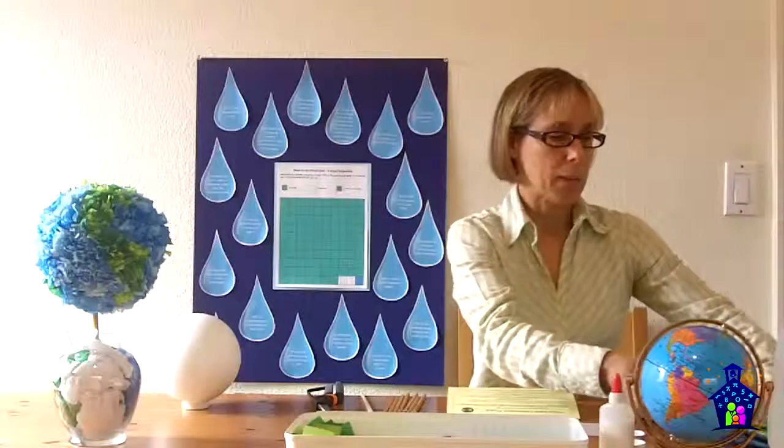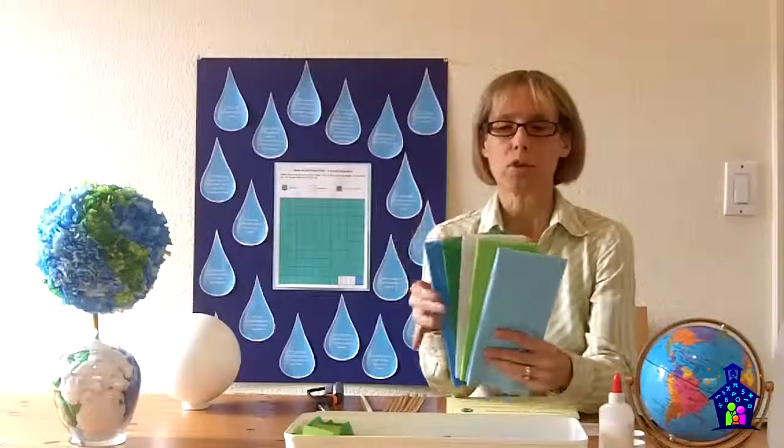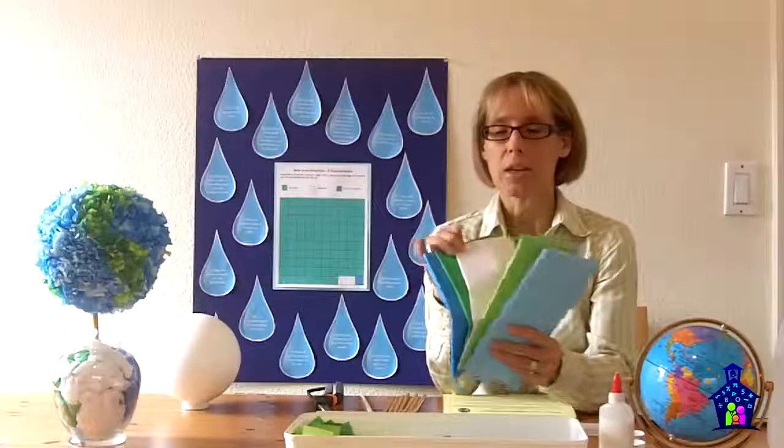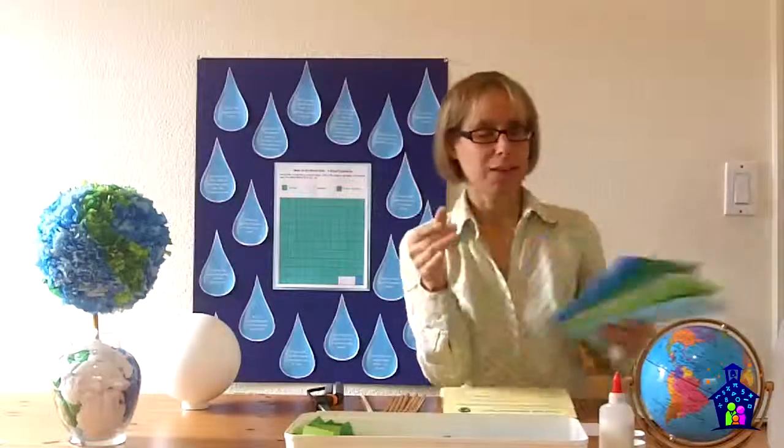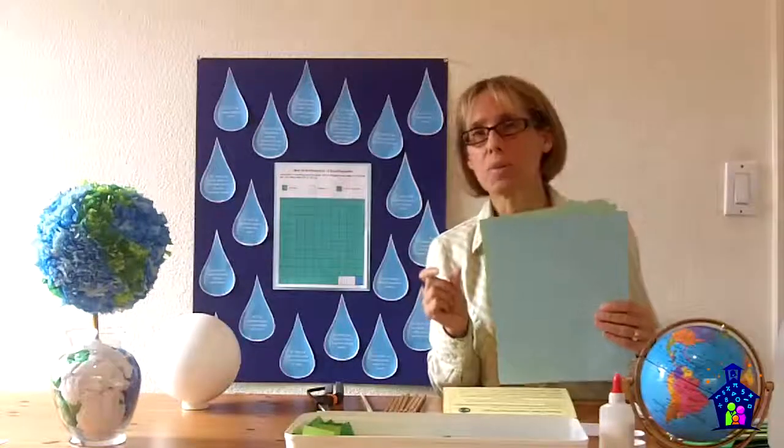You're going to need to gather some materials. First you're going to need tissue paper and I chose two different shades of blue and two different shades of green and then you'll need some white also for Antarctica. You're going to need a tag board or cardstock in green and blue and it's really important that it's cardstock and not construction paper because we're going to be putting a lot of glue on this and the construction paper doesn't hold up very well.